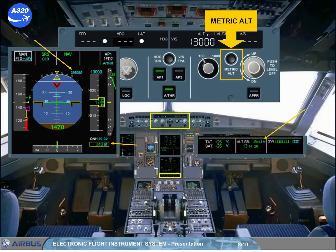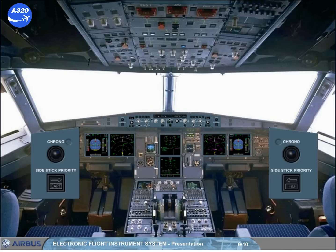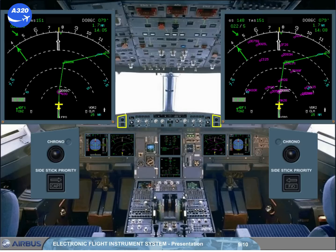You will see how all these selectors affect the EFIS displays in the modules that follow. The two chrono pushbuttons located on the glare shield control the associated chronometer display on the NDs. The pushbuttons operate like a normal stopwatch.